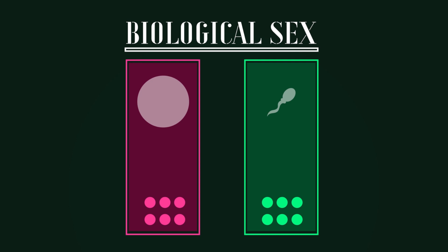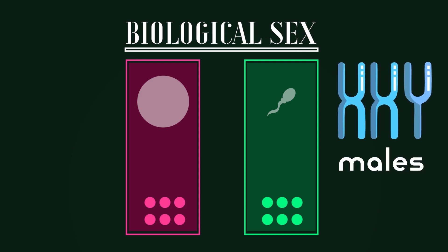For example, males born with two X chromosomes and one Y are still males, as their bodies develop towards the production of small gametes. And females born with only one X chromosome are still females, as their bodies develop towards the production of large gametes.